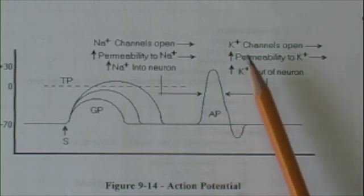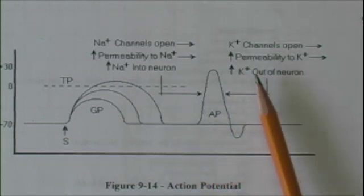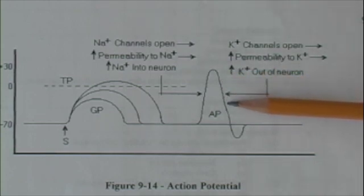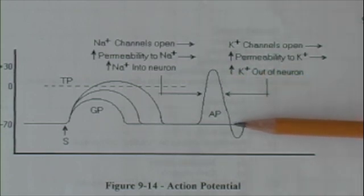This is immediately followed by an opening of potassium channels, increased permeability to potassium, and increased movement of potassium out of the neuron. That quickly drops the potential back to resting.